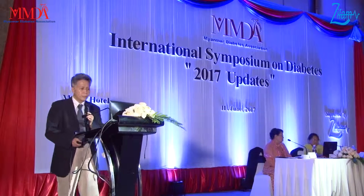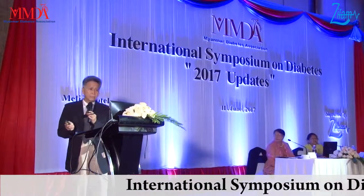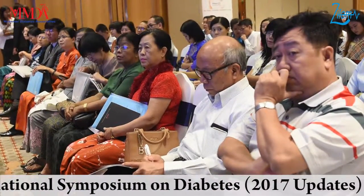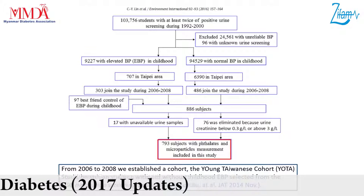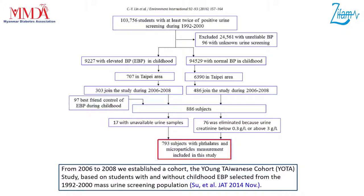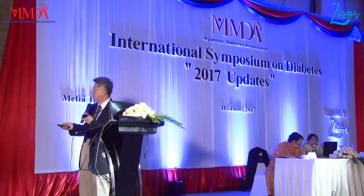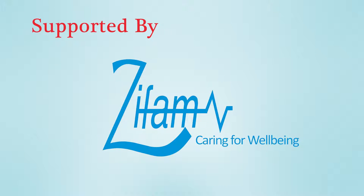This is our study population from a national cohort established from 1992 to 2000, with approximately 100,000 participants. In the Taipei area, from 2006 to 2008, we recruited 886 subjects to join the study. These are the subjects finally included in the analysis.